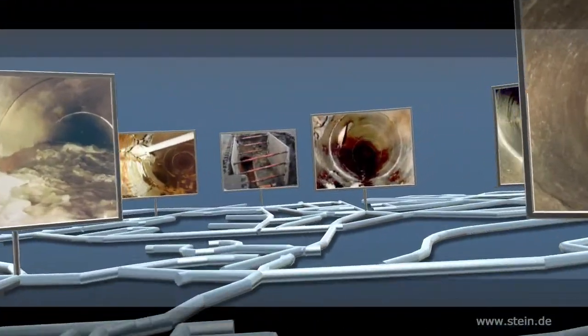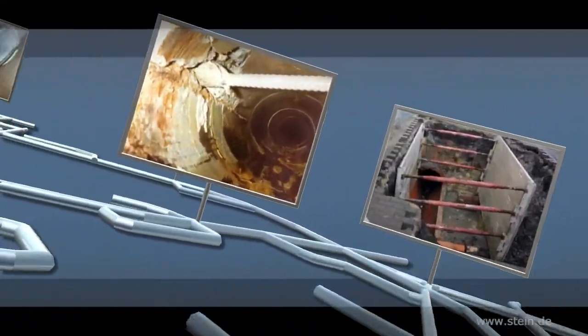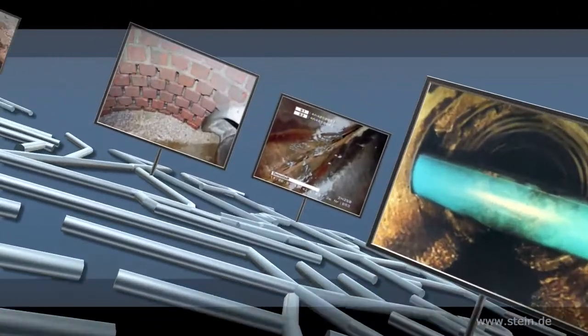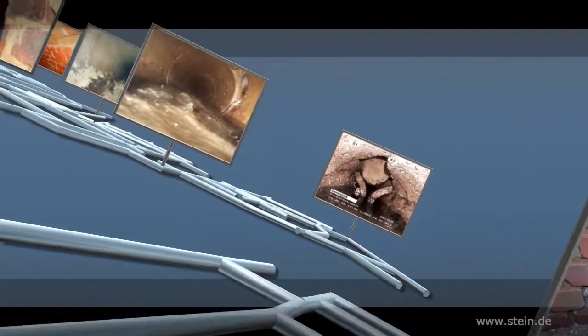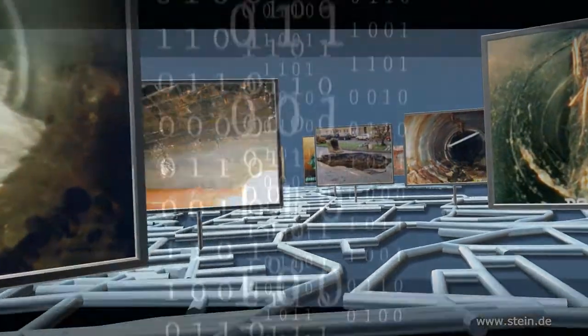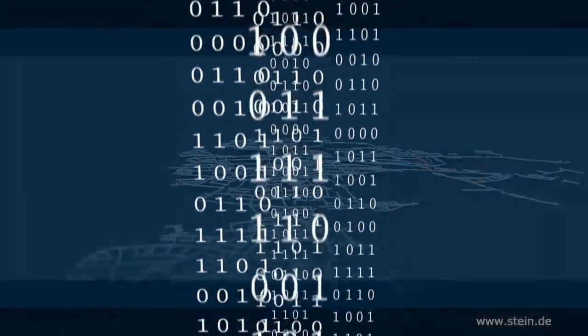Each TV inspection delivers various data sets related to the inspected sewer section. To draw the complete picture of the network, the data available from all inspected sewers is needed. All inspection data and their relations need to be correct, consistent and plausible.